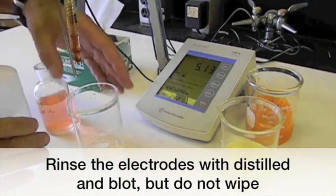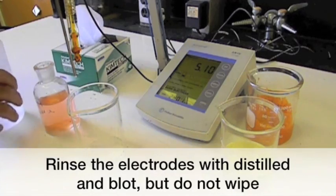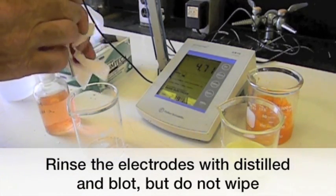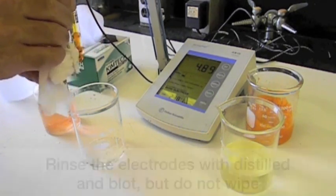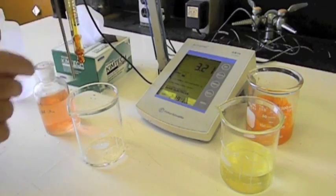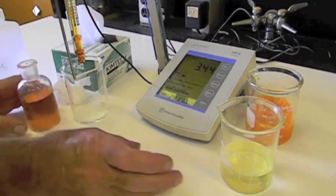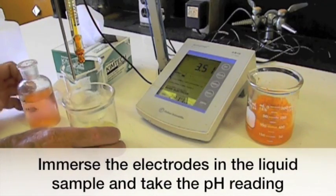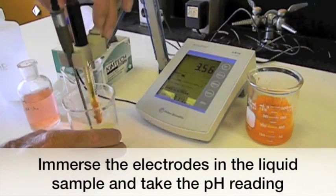Calibrate the pH meter and adjust the sample temperature to room temperature before measurement. Rinse the electrode with distilled water and blot. Do not wipe. Immerse the electrode in the liquid sample and take the pH reading.